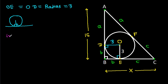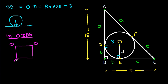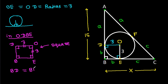Now in quadrilateral ODBE, three angles are 90 degrees, so this angle will also be 90 degrees. And we have OD equal to OE, that is 3. That means ODBE is a square. Therefore BD = BE = 3, and since BD is b and BE is b, we get b = 3.